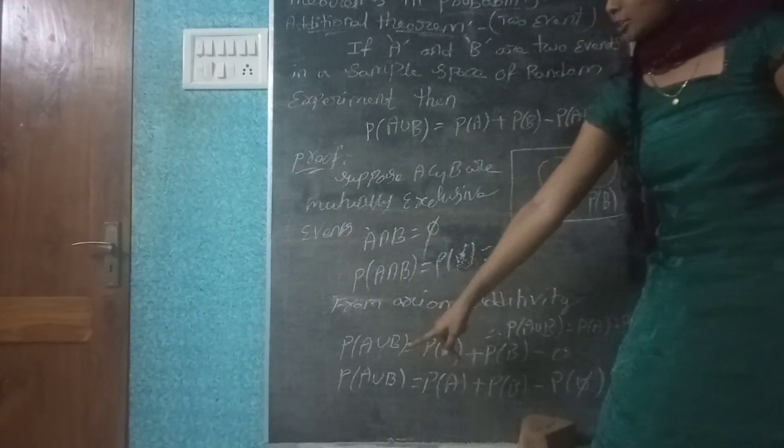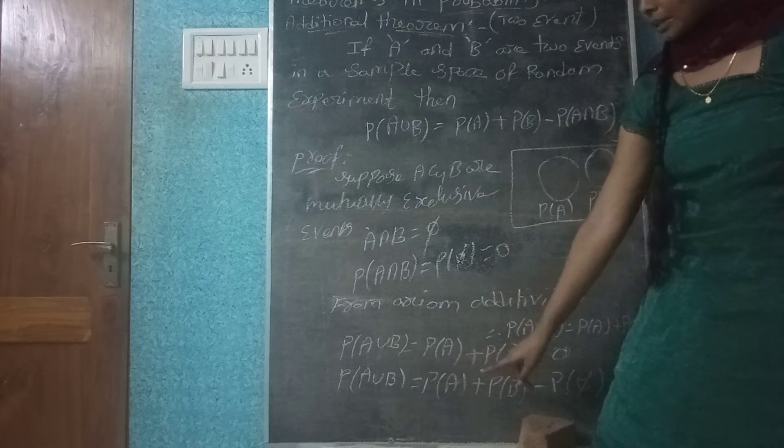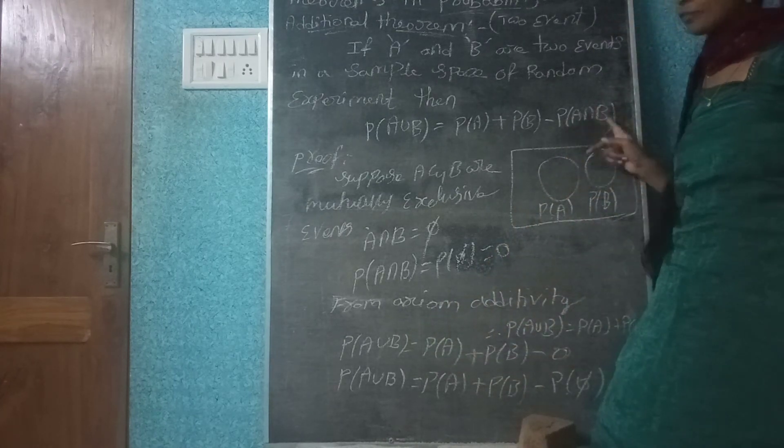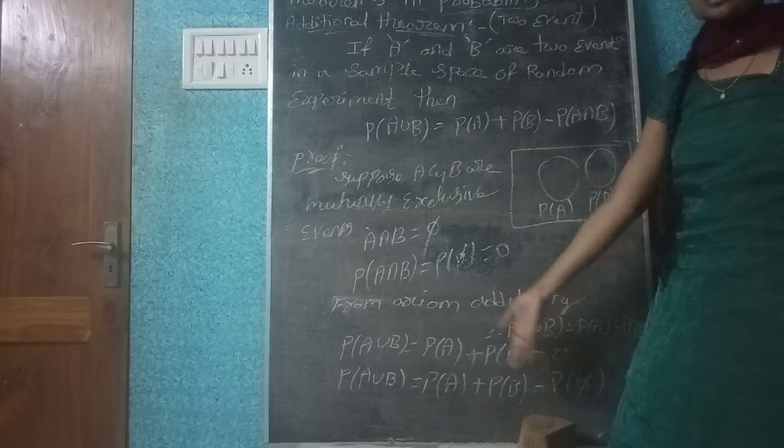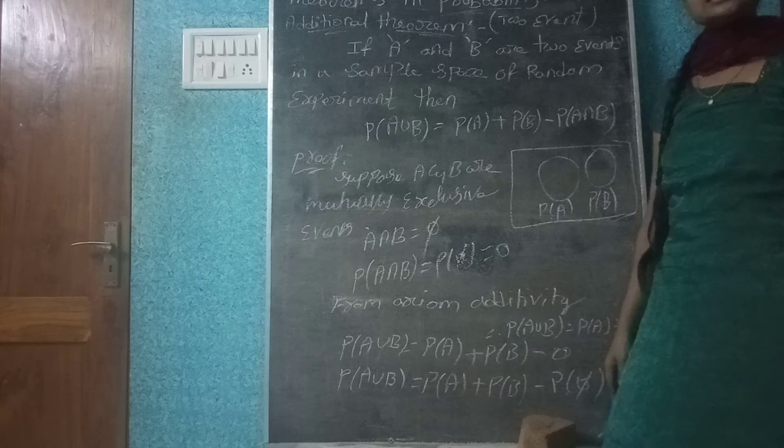Hence proved, P of A union B is equal to P of A plus P of B minus P of A intersection B and proved. We have proved. So LHS is equal to RHS, hence proved.